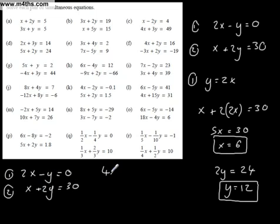Let's double equation 1 and make the y's the same. So it's going to be 4x minus 2y equals 0. All I've done is double that top one, multiply the whole thing by 2. We'll leave this one alone.